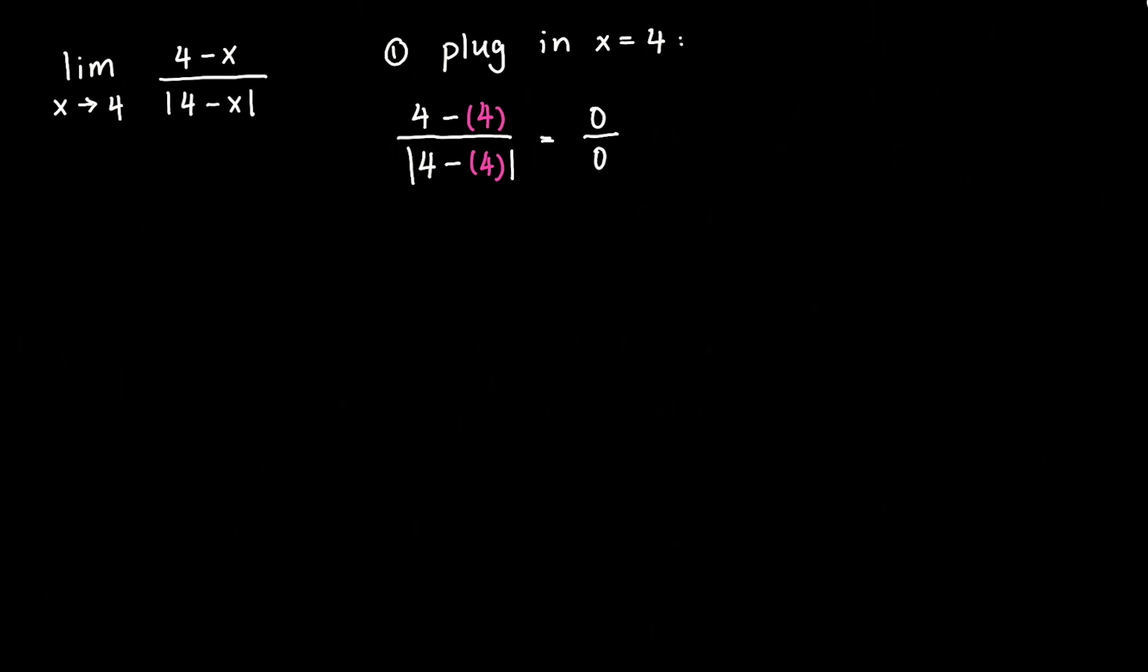And that gives us zero over zero. Well, the answer is not zero. I wish it was that easy, but zero over zero is often called indeterminate form, so therefore we need to try other methods.